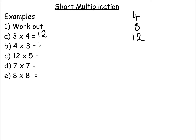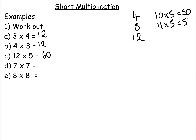Four times three is also 12. Remember that it doesn't matter which way round with multiplying, you're going to get the same answer. Twelve times five is 60. Again, if you weren't sure, just write down your five times table or think about what you may know. You may know that 10 times five is 50, so 11 times five is 55, so 12 times five is 60.